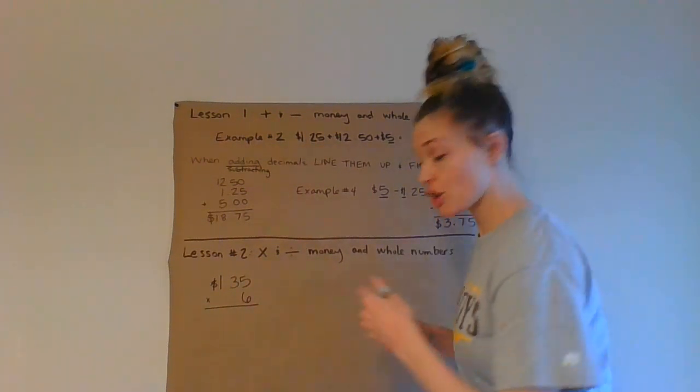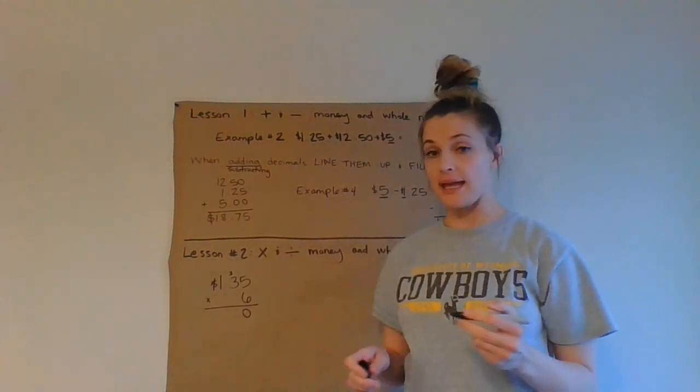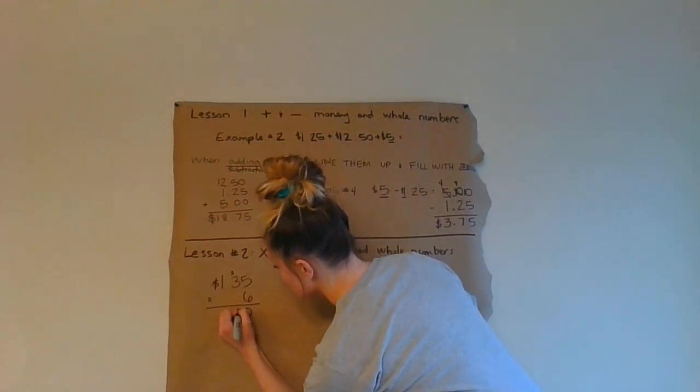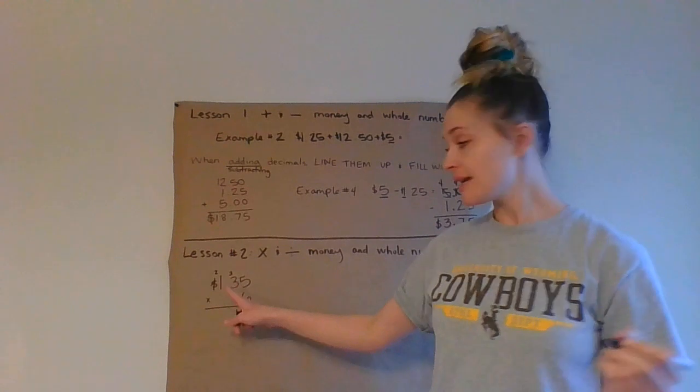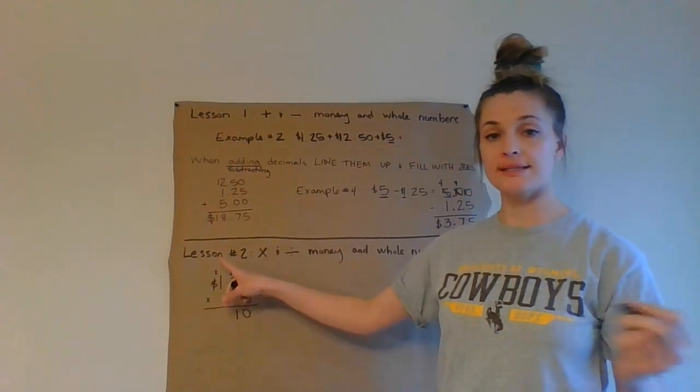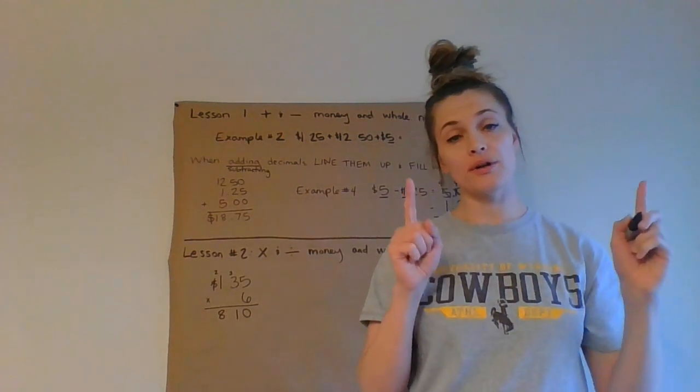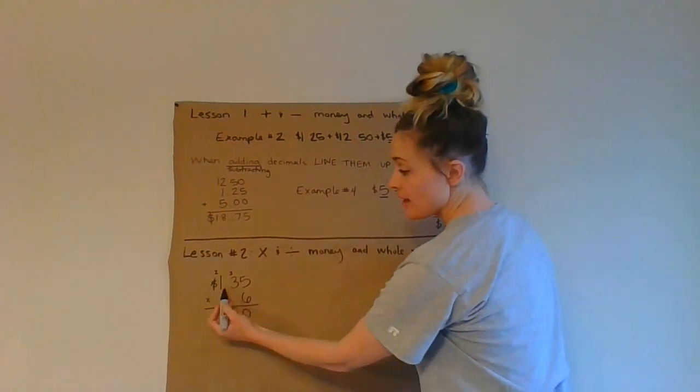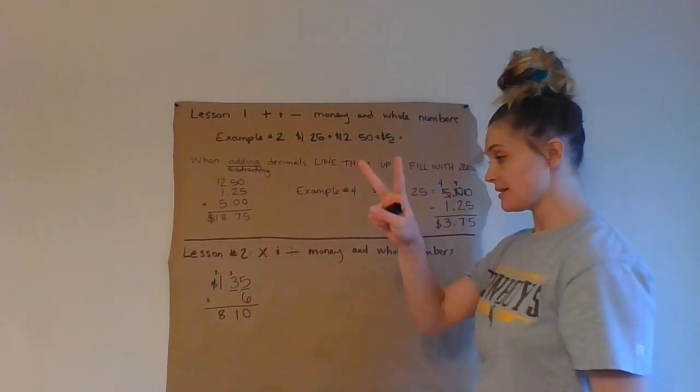Six times five is thirty. I put down my zero. I carry my three. Six times three is eighteen. Plus three is twenty-one. Put down my one. Carry my two. Six times one is six. Plus two is, sorry, I got distracted. Six times one is six. Plus two is eight. Put down my eight.